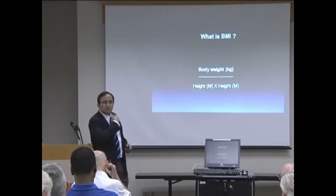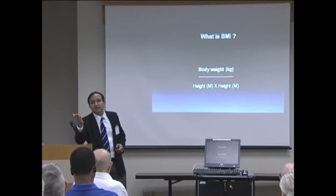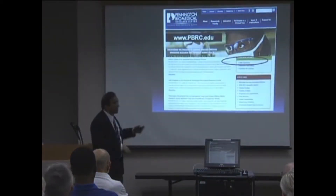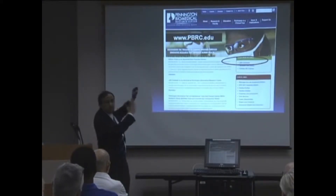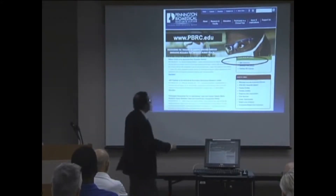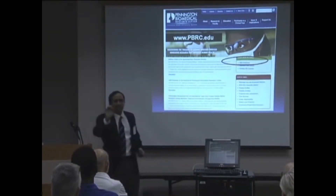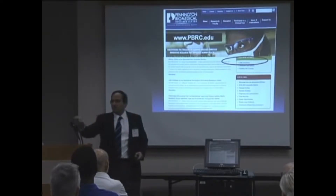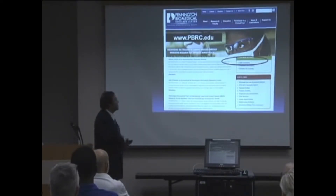You don't have to do the calculation yourself — I'm just showing you the formula. You can go to any website and they will calculate it for you, including the Pennington website. On our Pennington website main page, there is a BMI calculator in the right-side corner. Click on that, put in your pounds and your height in inches, and it will tell you your BMI and which category you fall into. It's very simple to do.